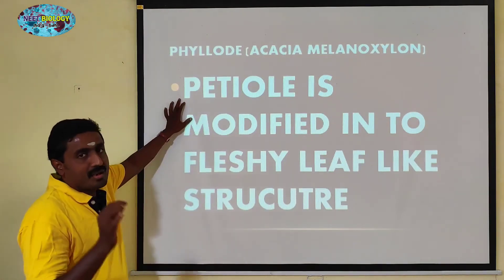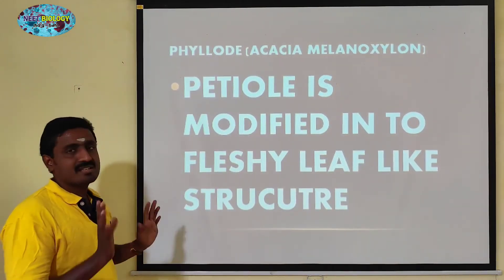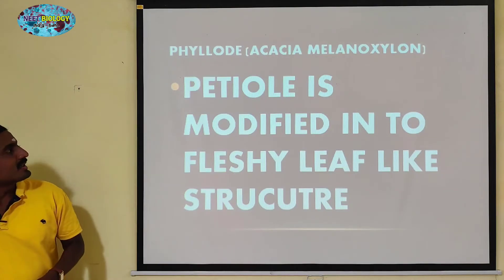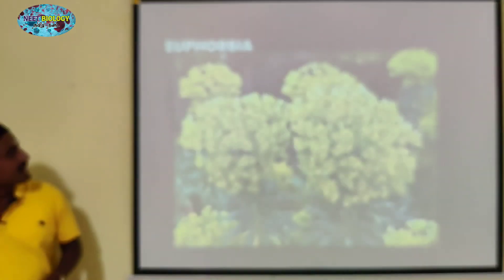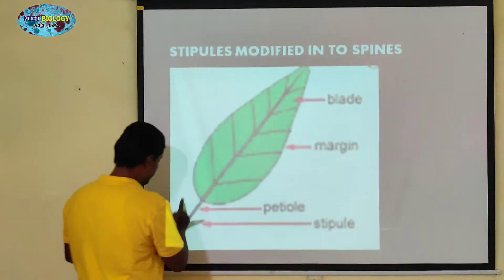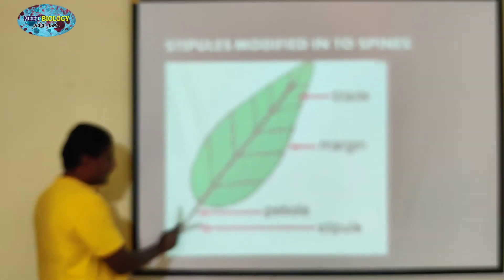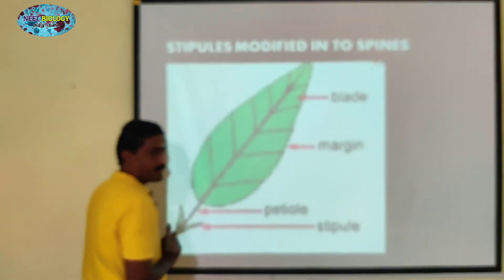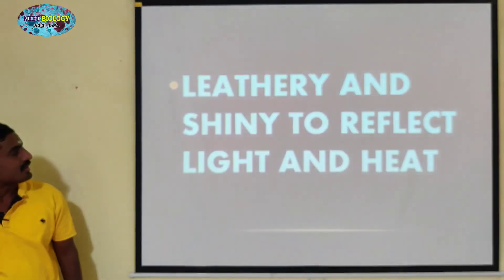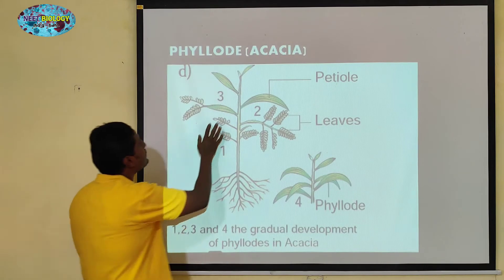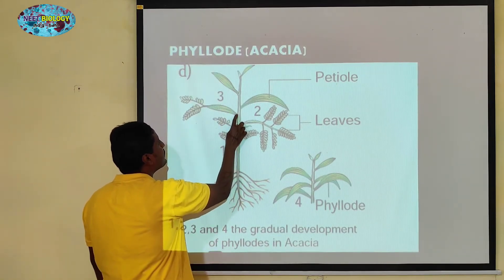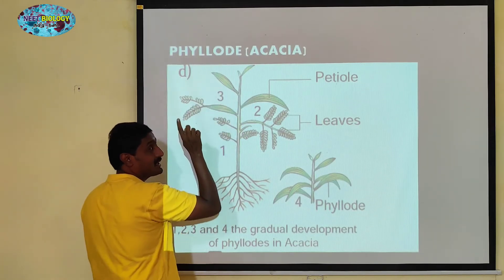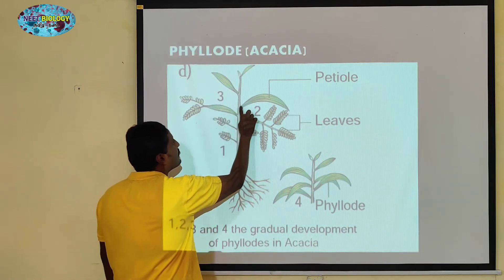Next, you need to consider the phyllode. This is the petiole — this is the fleshy leaf structure. The petiole is a leaf stalk. This is a node region, and this node is a leaf. This leaf is a stalk — this is a petiole. It is modified into a leaf. This stem is a leaf. This petiole is a flattened structure.